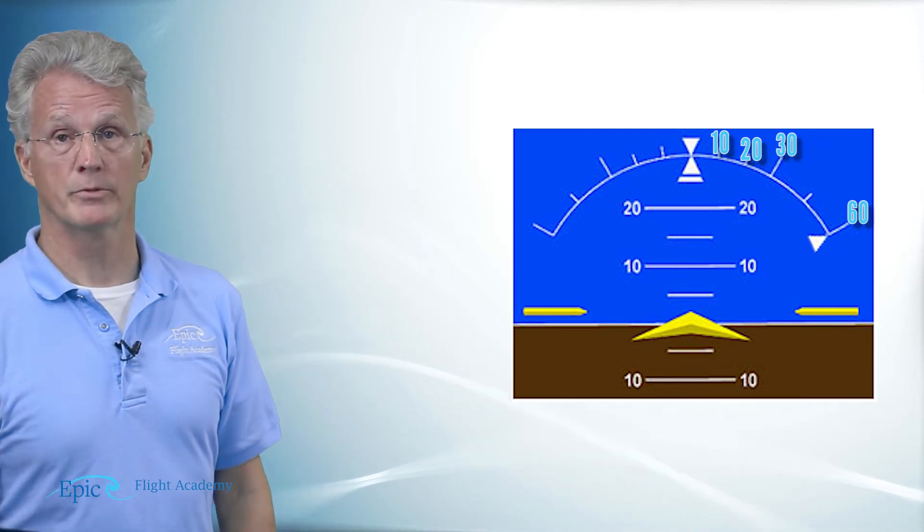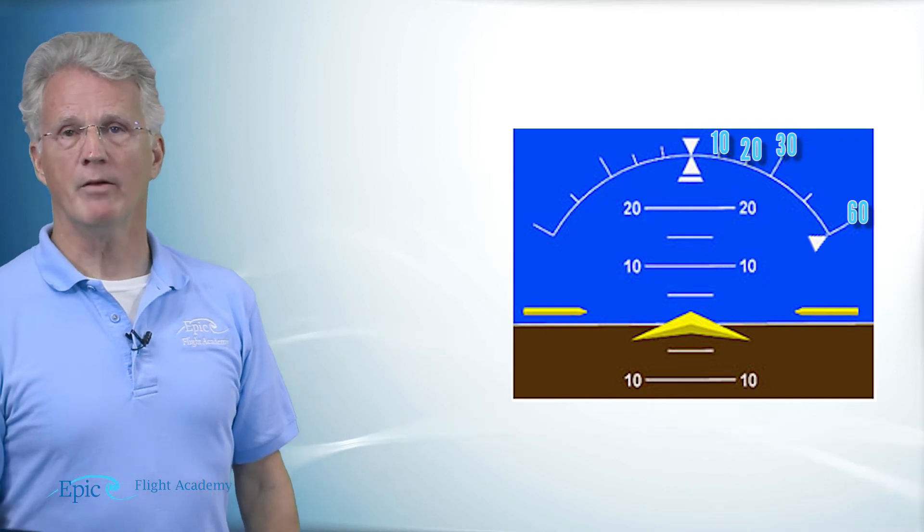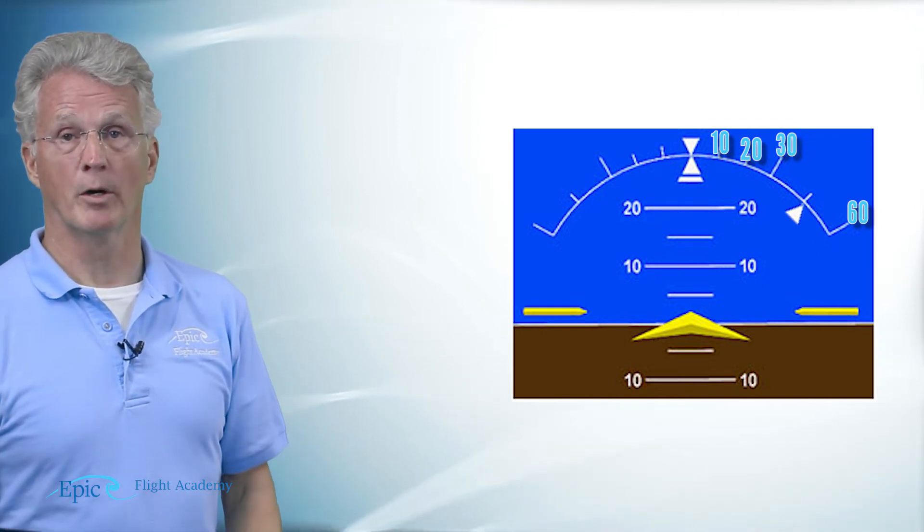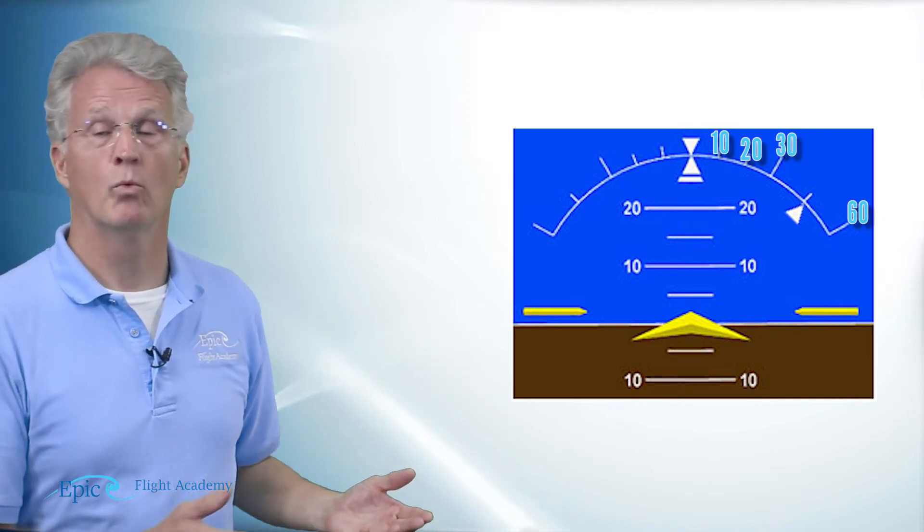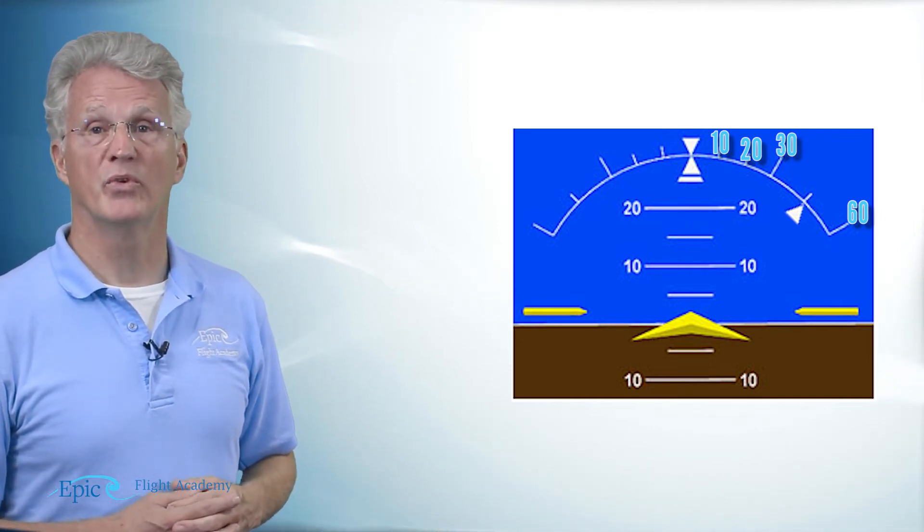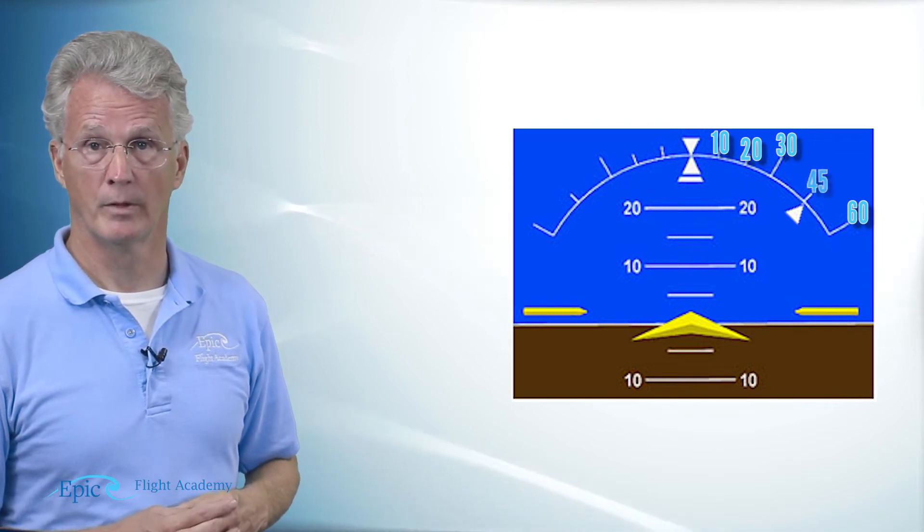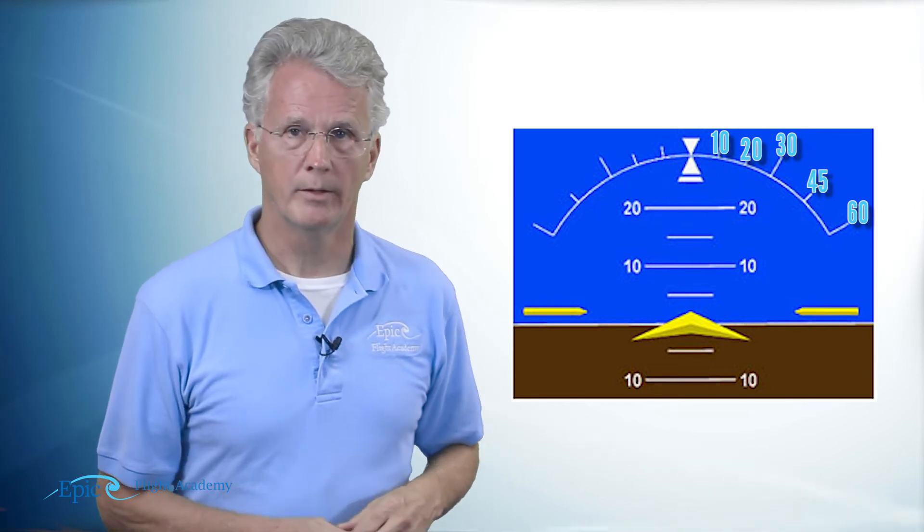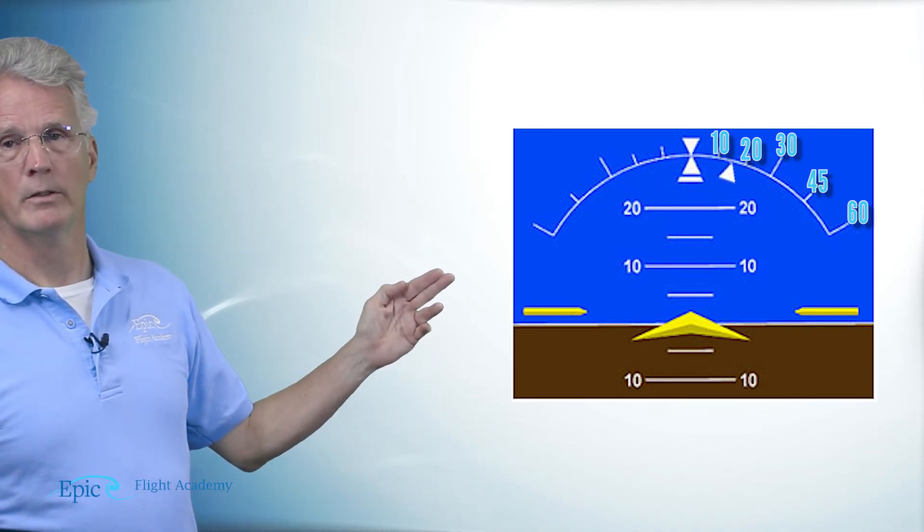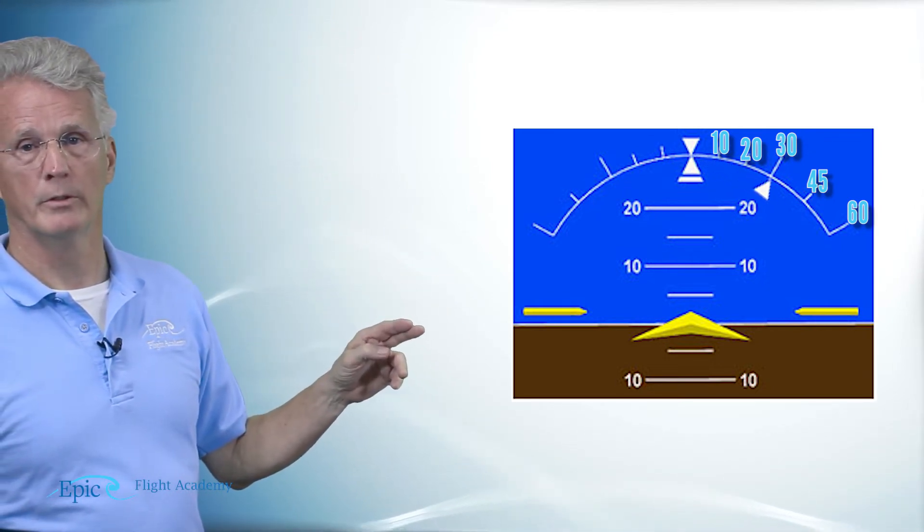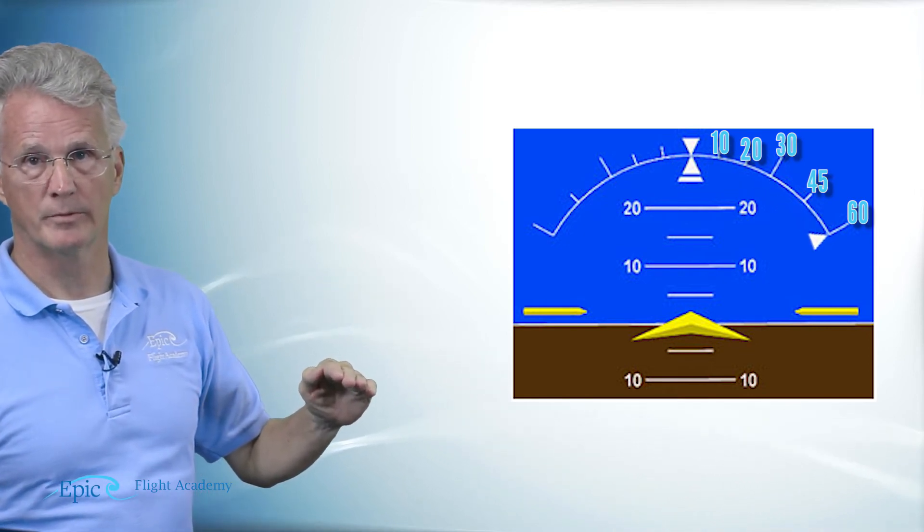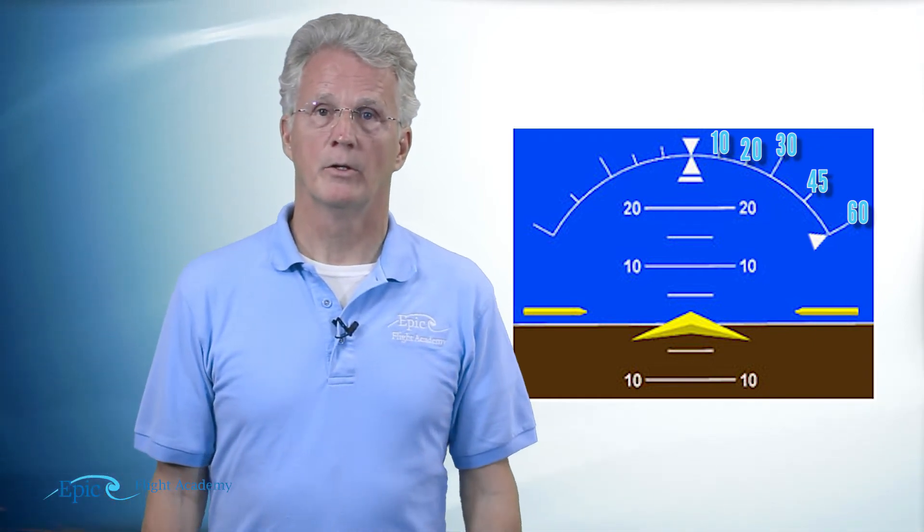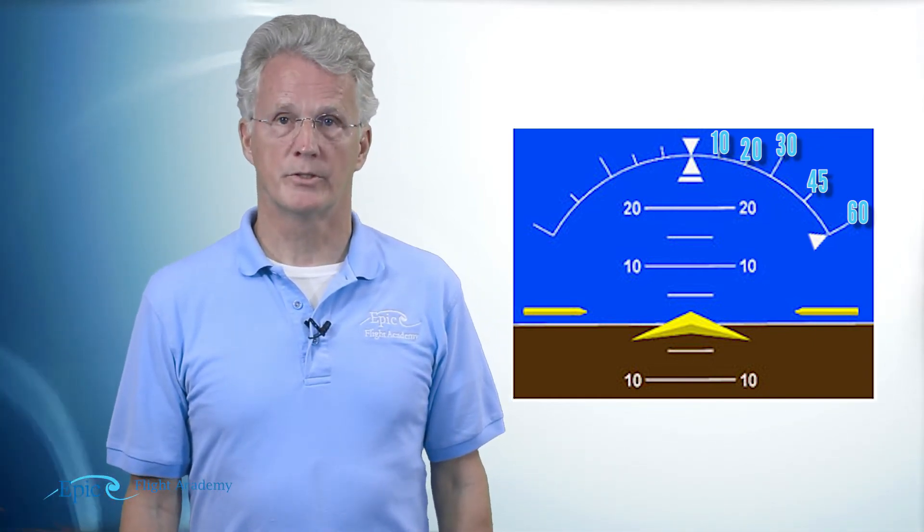Do you see the difference? Halfway in between there's only one tick mark, so it can't be 5, it can't be 10. What it is, is 15. So if you take a close look at that attitude indicator, we go 10, 20, 30, 45, 60. The big white ticks are at 30, 30, and 60.